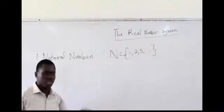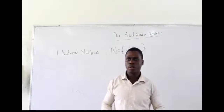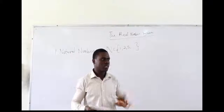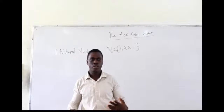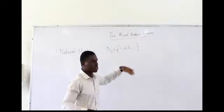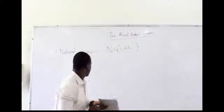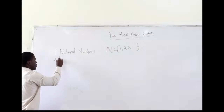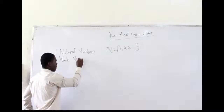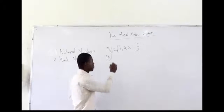These numbers were enough for this particular farm, until you realize — what if he goes to his farm and there are no animals? We don't have any animal. How would that be recorded? This brings in the idea of zero. Zero added to these numbers gave birth to another set of numbers which we refer to as whole numbers, denoted with a capital W.